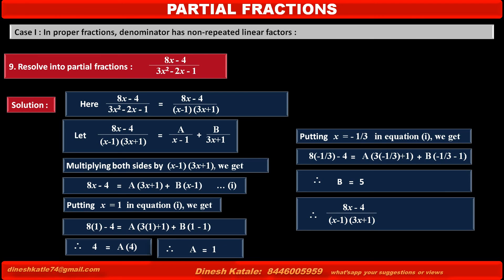Therefore the given fraction (8x - 4) / [(x - 1)(3x + 1)] is equal to 1/(x - 1) + 5/(3x + 1), using the values A = 1 and B = 5.